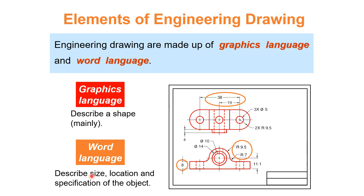The word language consists of numbers like 38, 19, 5, and 4, which describe the size, location, and specification of the object. We need both graphics language and word language to completely produce a drawing in engineering drawing. Both are necessary and have their own importance.